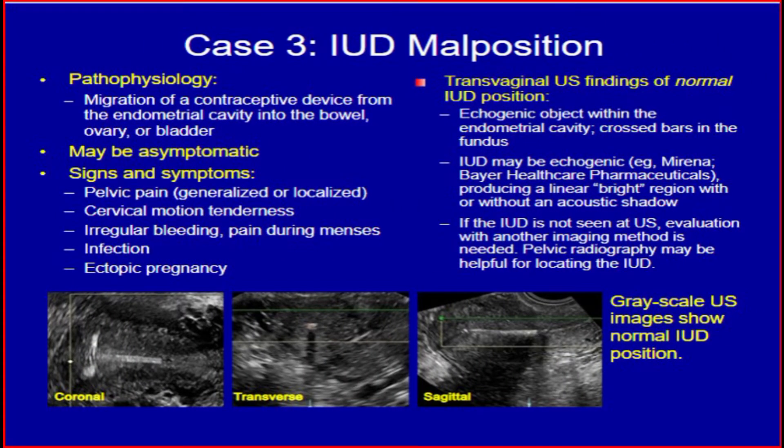IUD malposition pathophysiology: migration of a contraceptive device from the endometrial cavity into the bowel, ovary, or bladder. It may be asymptomatic. Signs and symptoms include pelvic pain (generalized or localized), cervical motion tenderness, irregular bleeding, pain during menses, infection, and ectopic pregnancy.